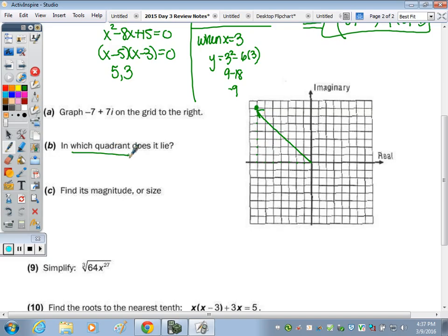In which quadrant? This is quadrant 2. And find its magnitude or size. So we make a right triangle. So that we can use Pythagorean theorem as this is a right angle in the coordinate plane. So this was 7, this was 7.